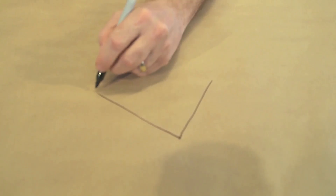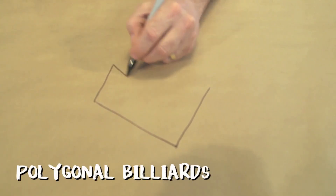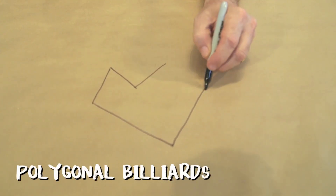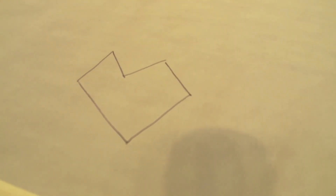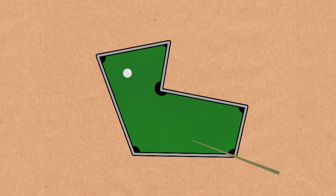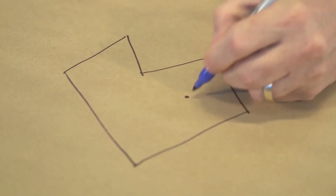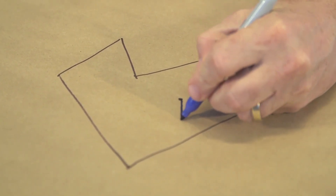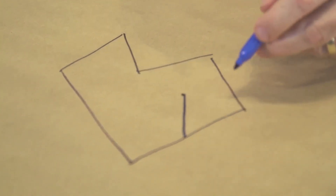I want to talk about a problem in mathematics called billiards — specifically polygonal billiards. You have some figure in the plane, maybe with straight sides or maybe not. You can think of this as billiards, or as a room where the sides have mirrors. We start at a point and move in a straight line until we come to the side.